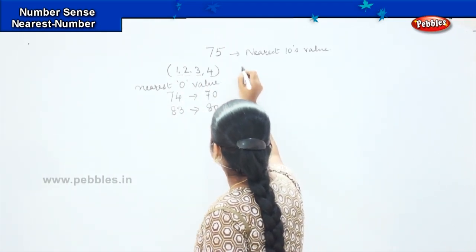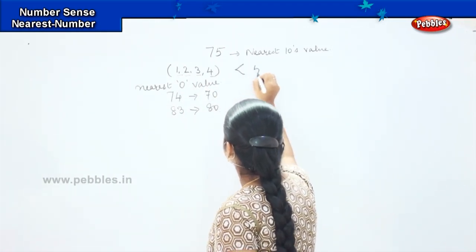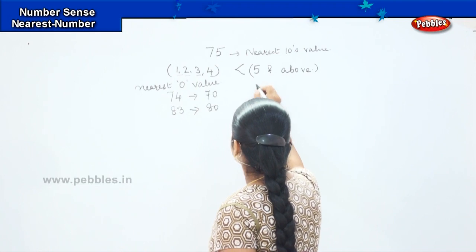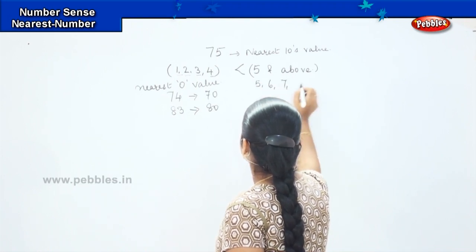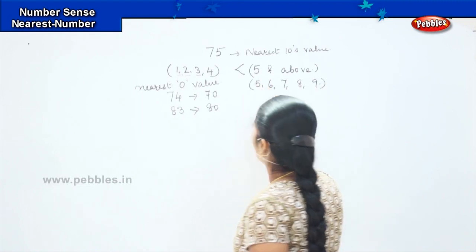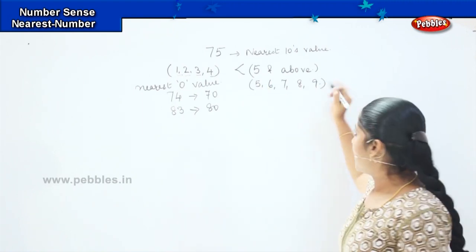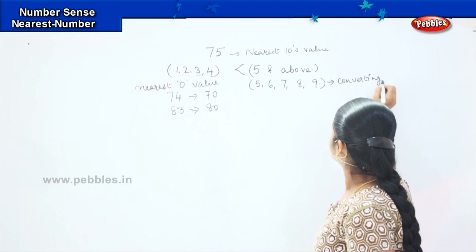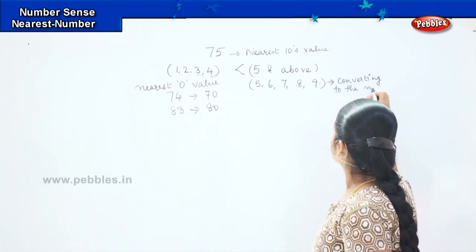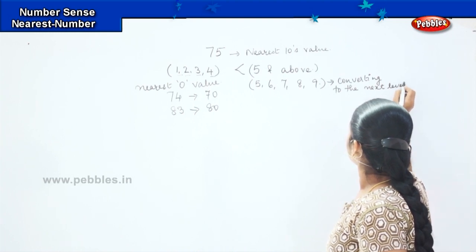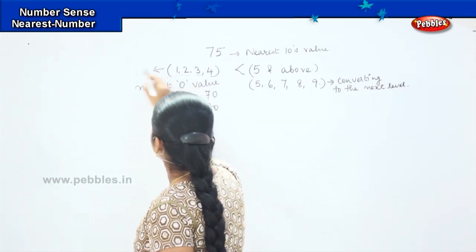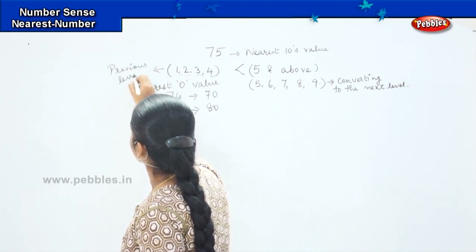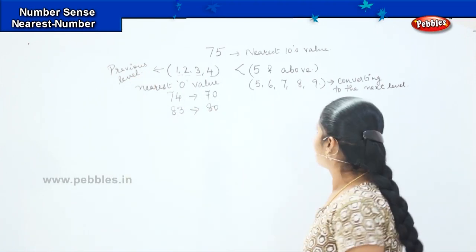Whenever a number ends in 5 or above — that is 5, 6, 7, 8, or 9 — we convert it to the next tens level, rounding up. For digits less than 5, we convert to the previous level, rounding down.